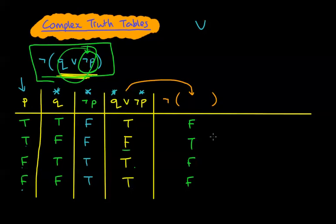You've got to think logically and build it up step by step. In later videos we'll look at more complicated examples needing more columns. Remember: brackets first, then build outwards. Similar things can be done with 'and' or the negation of Q, but we'll stop here and look at more examples next.